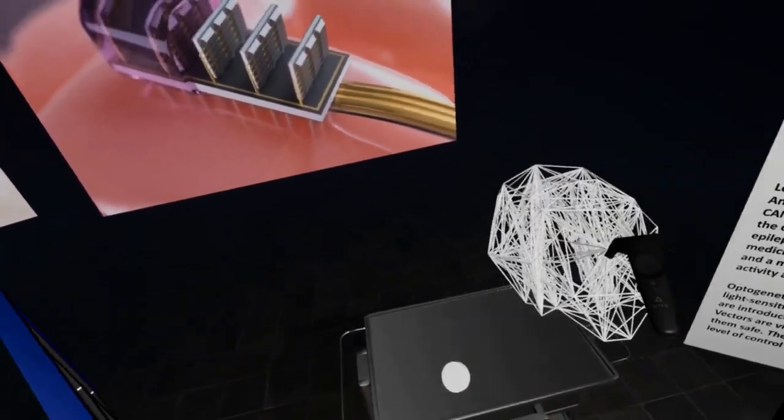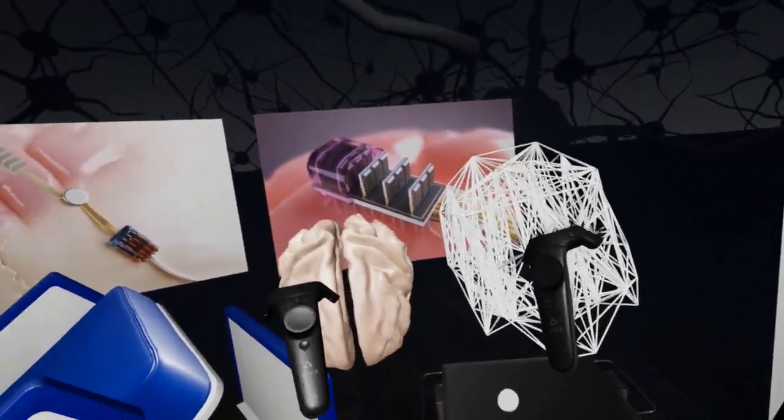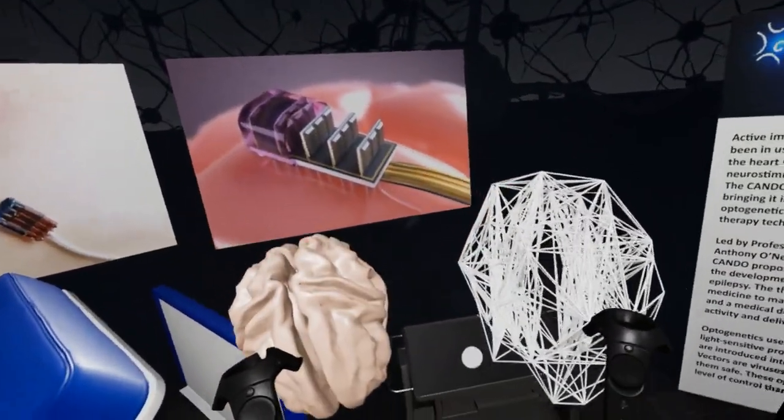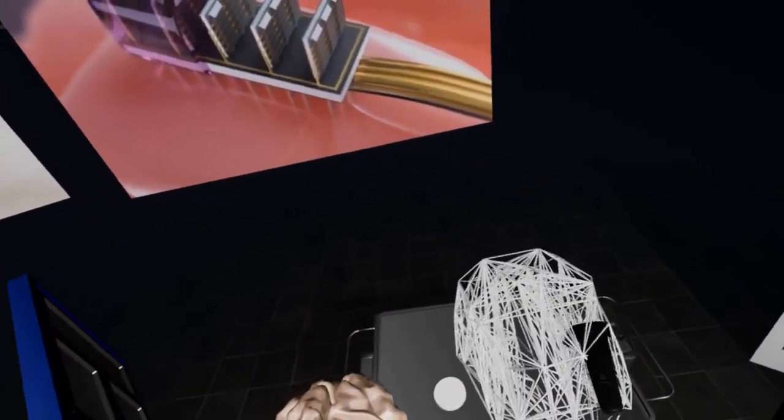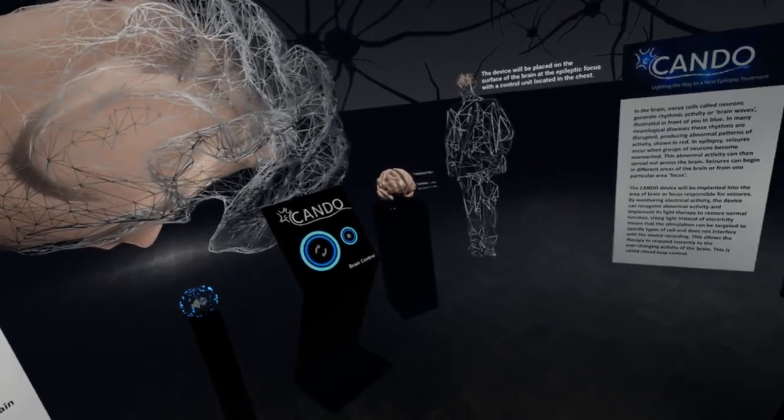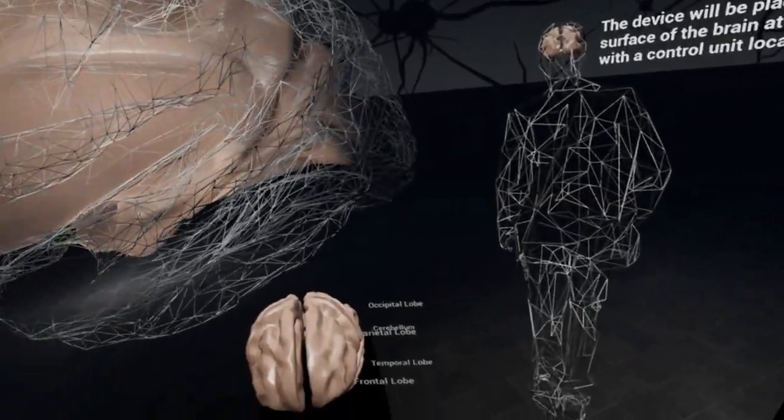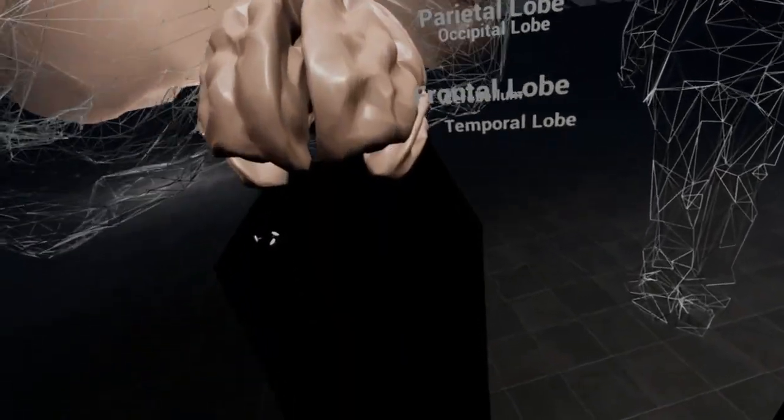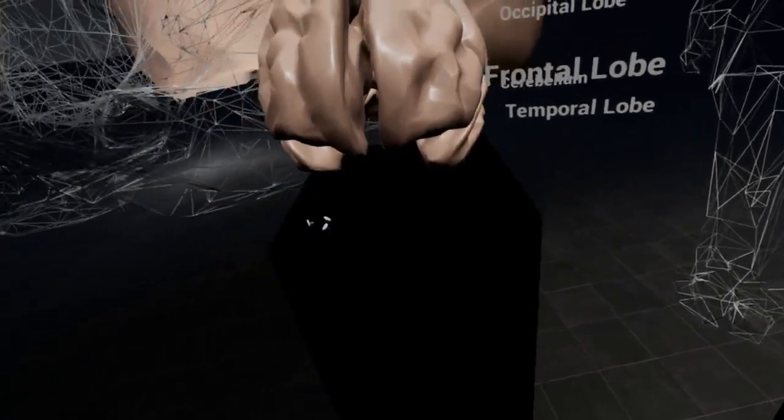When abnormal activity is detected, tiny LED lights in the device will be turned on within the brain. This will activate light-reactive proteins called opsins within surrounding neurons, restoring normal activity and preventing further spread of abnormal activity.